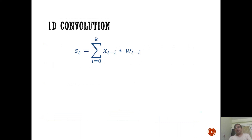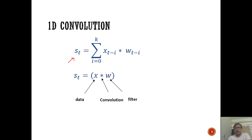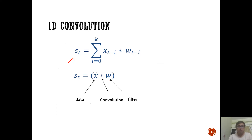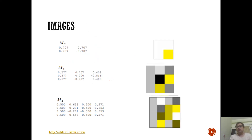Generalizing, for a particular output value you aggregate the input values x going from p minus i with their corresponding weights w. This can be expressed as x convolved with w — where x is the data vector, the asterisk denotes convolution, and w is called the filter. These are the key terminologies we will use.